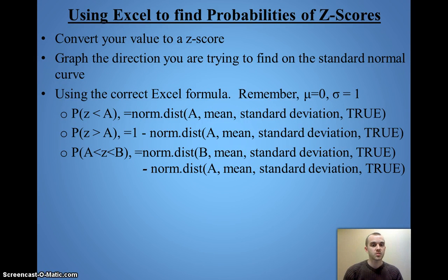Now, if we need to find the probability, we're going to do the z-score. We're going to create that curve, that graph, so that we know which way we're actually looking. And then we use the formula norm.dist. In this case, then, inside will be the A values, that z-score we just found. Our mean and standard deviation are always zero and one if we convert everything to the standard normal. And then we always use true at the end.